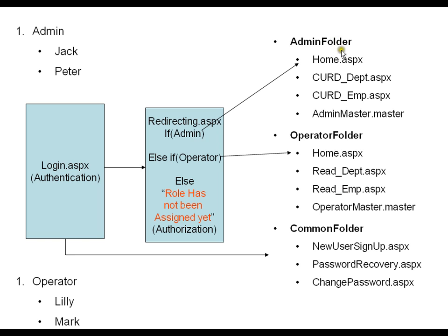So my project has three folders: admin folder, operator folder, and common folder. The admin folder has four files, the operator folder has four files, and the common folder has three files. I also have two more files outside all these folders — the login page and the redirecting page. This is my project architecture, or directory structure. My directory structure has an admin folder, an operator folder, a common folder with their respective files, and two standalone pages: login and redirecting.